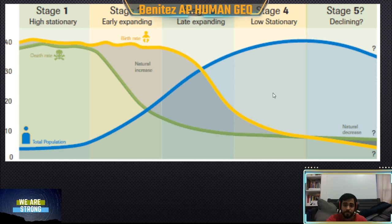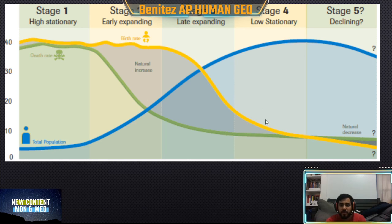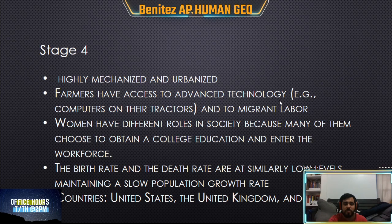In stage four, since not many people are dying, people are living to be 70 and 80 years old. The total population stays really high even though families are only having one or two kids — those kids end up living for a much longer period of time. Examples of countries in stage four include the United States, United Kingdom, and Australia.